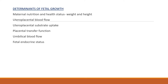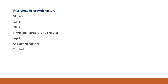The determinants of fetal growth include maternal nutrition and health status, utero-placental blood flow, utero-placental substrate uptake, placental transfer function, umbilical blood flow, and fetal endocrine status. The key growth factor substrates include glucose, insulin-like growth factor 1 (IGF-1), IGF-2, thyroxine, leptin, angiogenic factors, and cortisol.